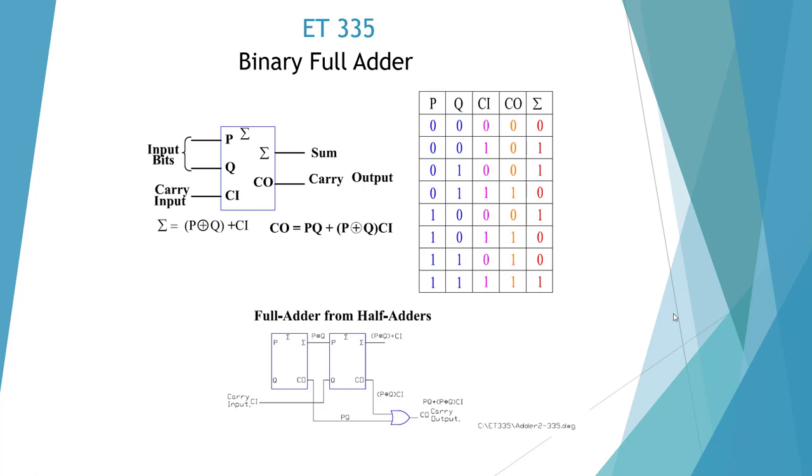When we add these up, the only difference is when we get beyond 2, we need to have a sum of 1 and a carry of 1. Up to that point we have a 2. But anytime we have that carry input and P and Q are 1, we're going to get a sum of 1 and a carry output of 1.